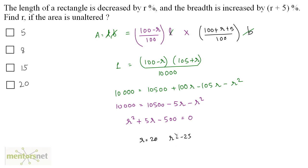Since rate cannot be negative, we take the positive value. So r equals 20, and option D is the correct answer.